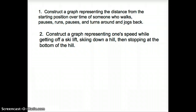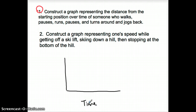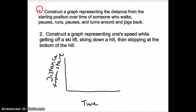I've got two more tasks. The first is to construct a graph representing the distance from the starting position over time of someone who walks, pauses, runs, pauses, turns around, and jogs back. Make sure time is on the X-axis and distance from start is on the Y-axis — not total distance traveled. When they're walking, they're increasing but not very fast. When they pause, since this is distance on the left, it would be a flat line.